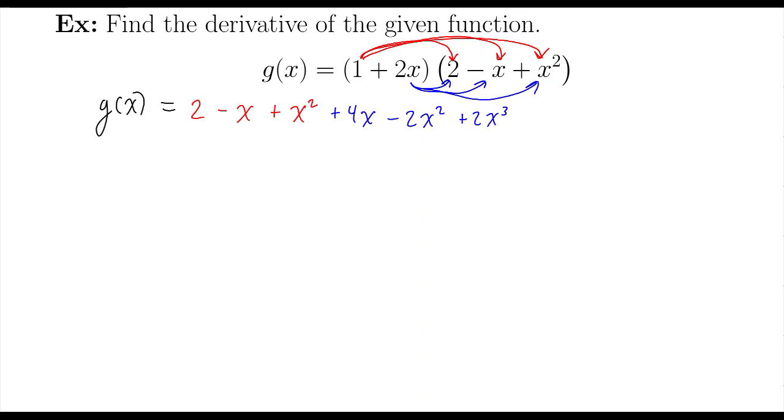Let's combine our like terms. I only have one constant, so that's taken care of. Negative x plus 4x. Those are like terms. So that's going to be a positive 3x. I have x squared and negative 2x squared. That'll give me negative 1x squared. Those are taken care of. And then plus 2x to the third power.